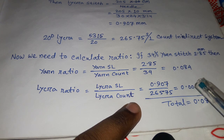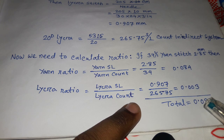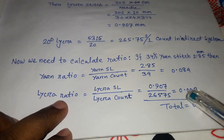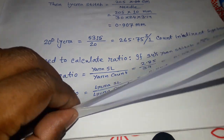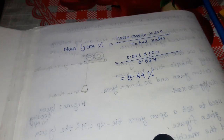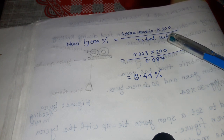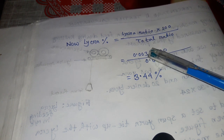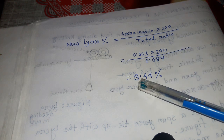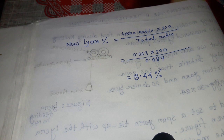We then add the two values: 0.084 plus 0.003 gives a total ratio of 0.087. Now we calculate the lycra percentage using the formula: lycra ratio multiplied by 100, divided by total ratio — that is 0.003 times 100 divided by 0.087. After calculation, we get 3.44 percentage. This is the lycra percentage of your fabric.